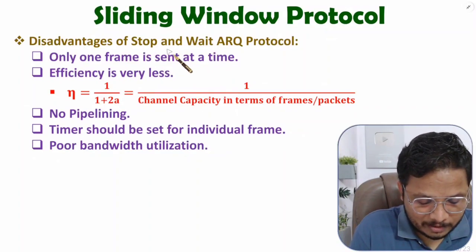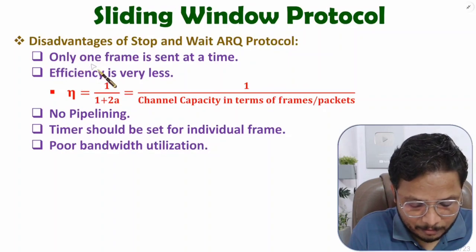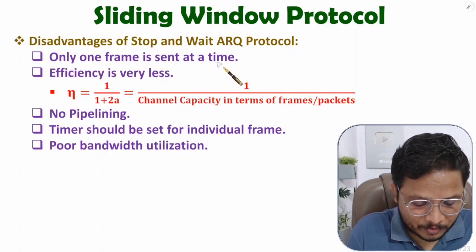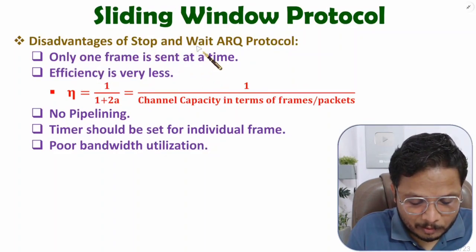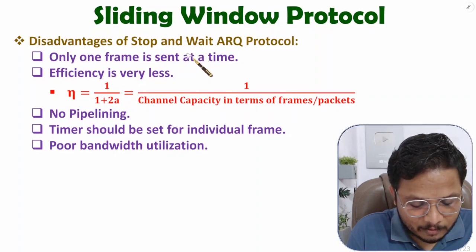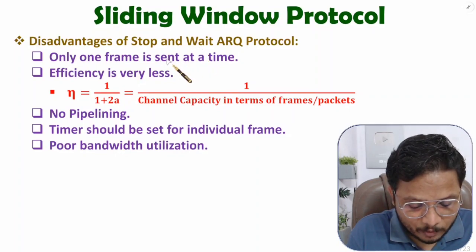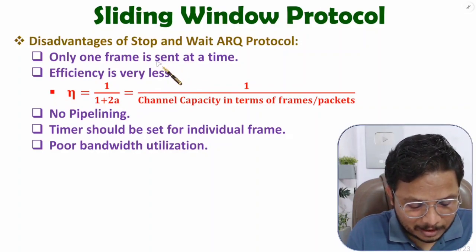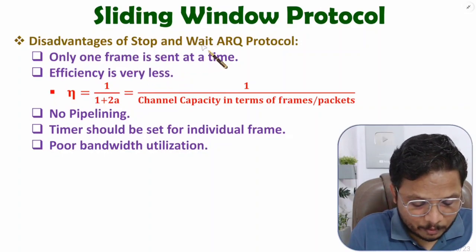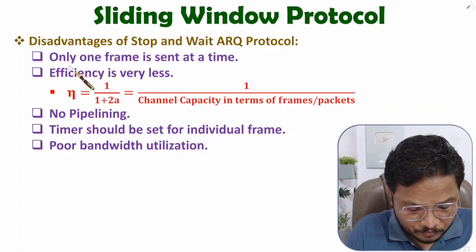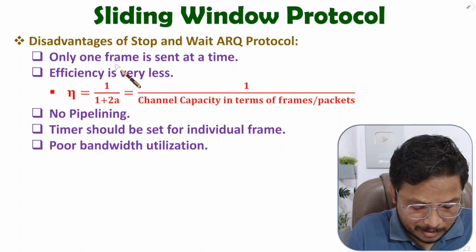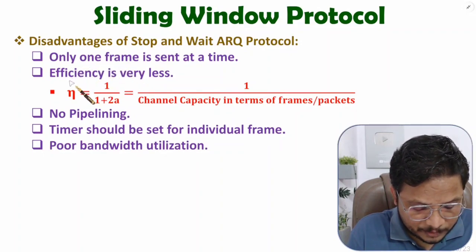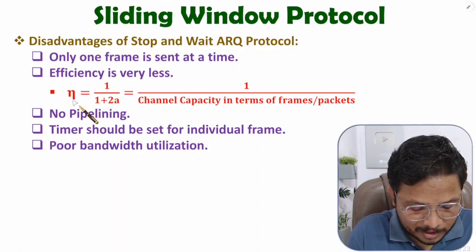In stop-and-wait protocol we can send only one frame at a time on the medium. What we were doing is sending one frame first and waiting for acknowledgement at the transmitter side. Once acknowledgement is received, only then we can send another frame. So in stop-and-wait protocol we can send only one frame at a time — that is the biggest disadvantage, and because of that efficiency is very less.